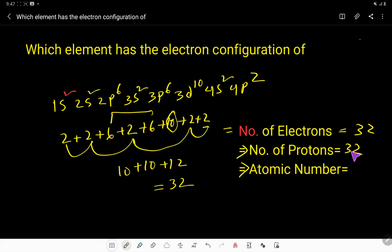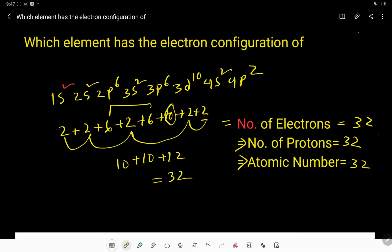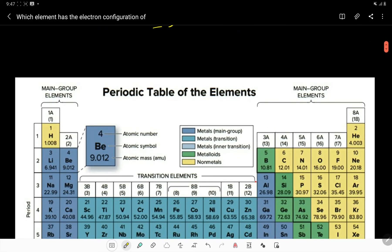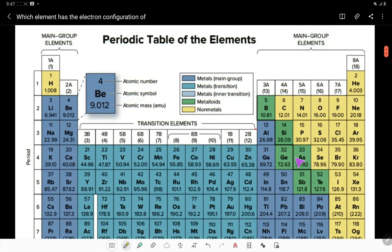So this element's atomic number will be 32. Now we have to use our periodic table to find out the name of the element whose atomic number is 32. Let us open the periodic table and search for atomic number 32.